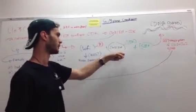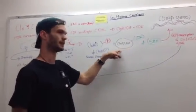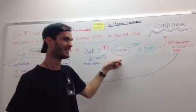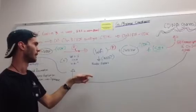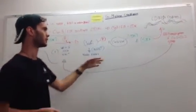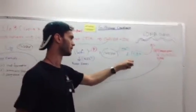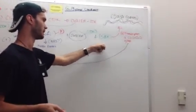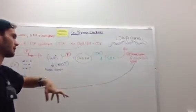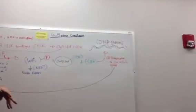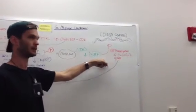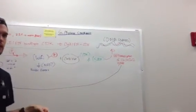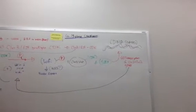We still have the cyclin 3 CDK or the E2F CDK complex present, and the nuclear export of wifi opens up room for the transcription factor SBF to bind to certain sites on the DNA genome of the cell. This stimulates transcription of cyclin 1 and cyclin 2 genes, which are very similar to cyclin 3.